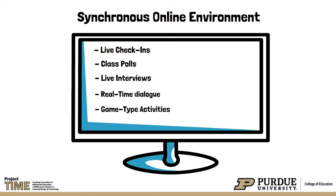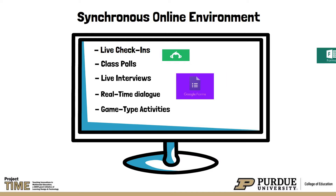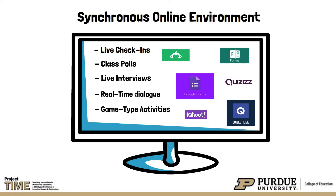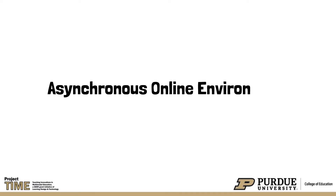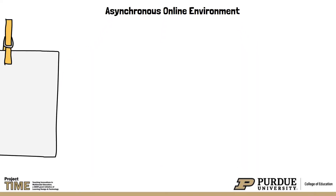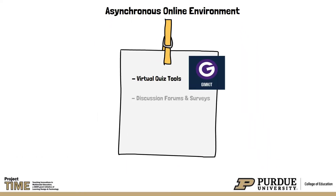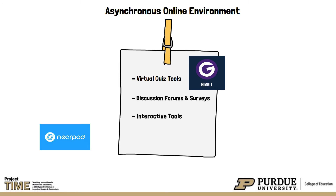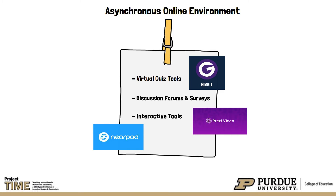There are many tools that teachers can use, like Survey Monkey, Google Forms or Microsoft Forms, Kahoot, Quizlet Live, or Quizzes, to gather immediate feedback from students and confirm whether they have mastered the instructional content. For asynchronous online classes, virtual quiz tools such as GimKit, discussion forums and surveys, or interactive tools such as Nearpod and Prezi Video can be used to gauge student understanding and needs.